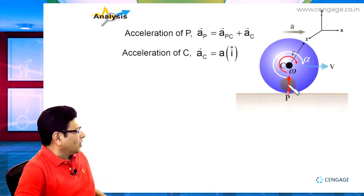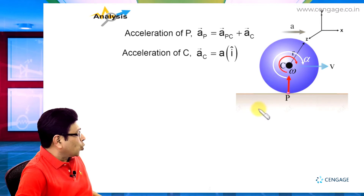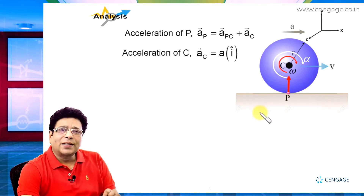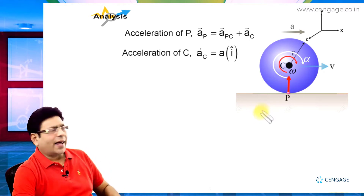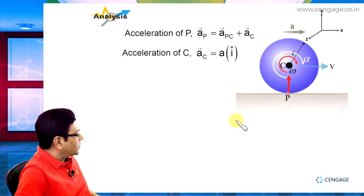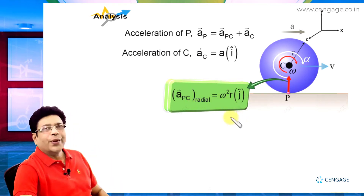The direction of the radial acceleration is parallel to the positive y direction. So in unit vector notation, we can write the radial component of the acceleration of P with respect to C as omega squared r j-cap.